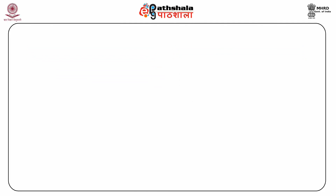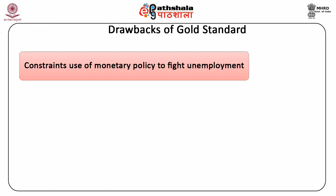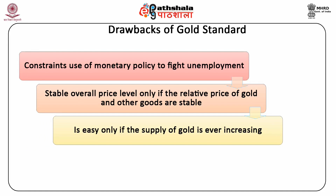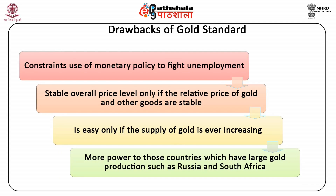The drawbacks of the gold standard are as follows. First, it constrains the use of monetary policy to fight unemployment. Second, attaching currency value to gold ensures a stable overall price level only if the relative price of gold and other goods is stable. Third, the use of gold as an international payment system is viable only if the supply of gold ever increases. Moreover, the gold standard gives more power to countries with large gold production, such as Russia and South Africa.